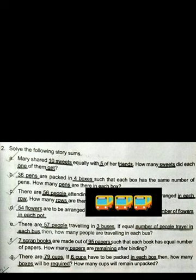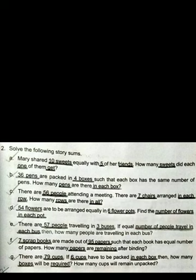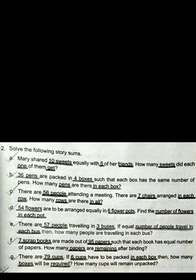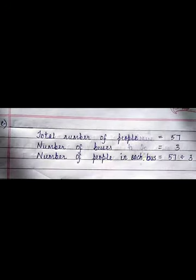Question E: There are 57 people traveling in 3 buses. If an equal number of people are traveling in each bus, then how many people are traveling in each bus? Total number of people is equal to 57, number of buses is equal to 3, number of people in each bus is equal to 57 divided by 3. Divide the numbers by yourself and write the number you get in the quotient.